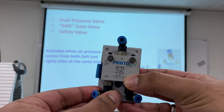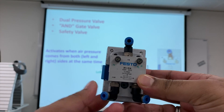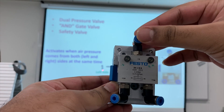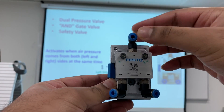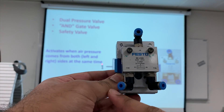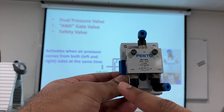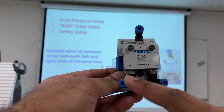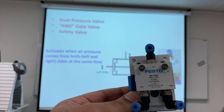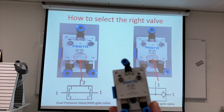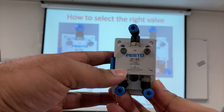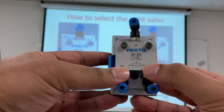This is the symbol for the dual pressure valve. On the left side and the right side, port two is the output port. For port two to activate, air has to come in from both directions — that's why this is called a dual pressure valve, or AND gate. This is the shuttle valve symbol, which is the OR gate.